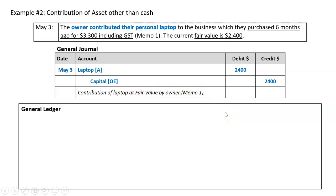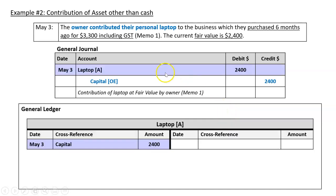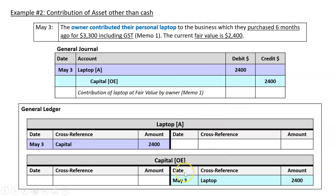And then we'll do our posting. So instead of a debit to cash, we'll do a debit to laptop. And we'll keep the capital credit just like we did, and just change the reference here. So in the capital ledger, it will say laptop instead of cash. Simple.